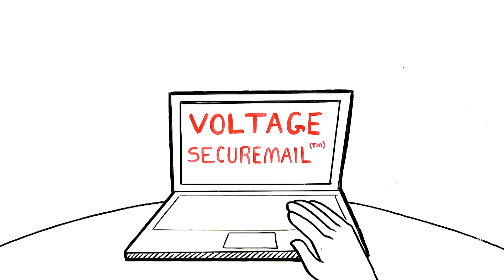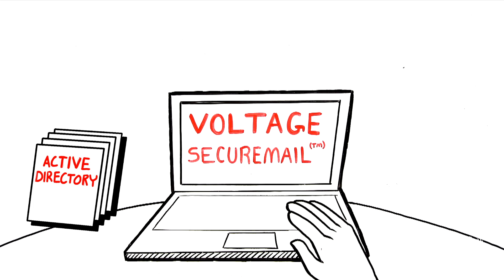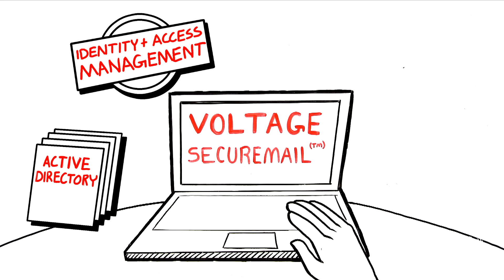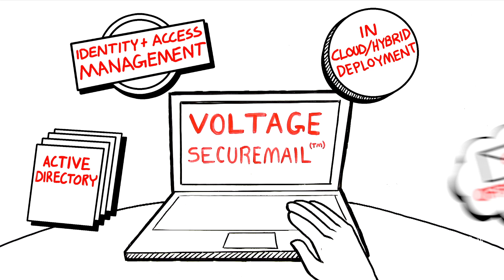Voltage Secure Mail also integrates with Active Directory and identity and access management systems for authentication on premise, in the cloud or hybrid deployments, as well as cloud email services such as Office 365.